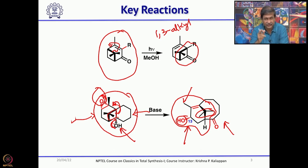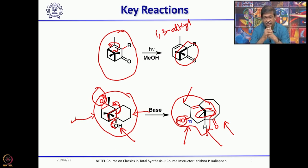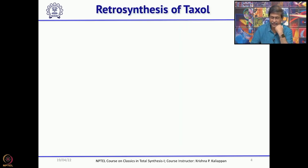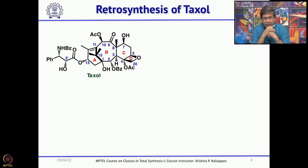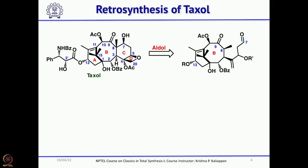What is missing is the bridgehead hydroxyl. In Taxol you have a hydroxyl group at the bridgehead position. These are the two key reactions which Wender's group thought about and wanted to use in the total synthesis of Taxol. The third key reaction, different from others, is the aldol reaction. They wanted to use an intramolecular aldol reaction to construct the C ring.